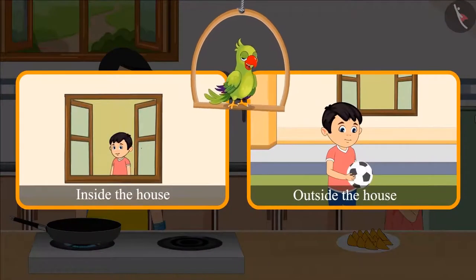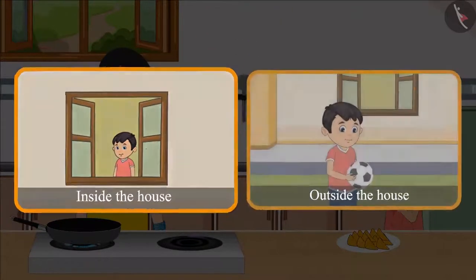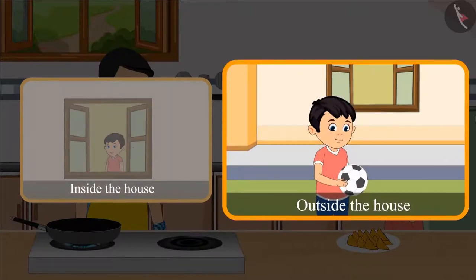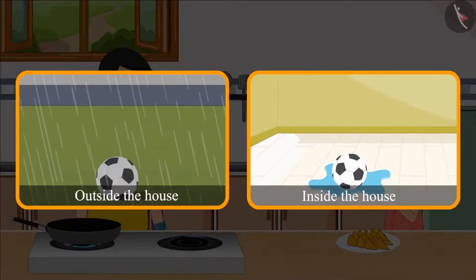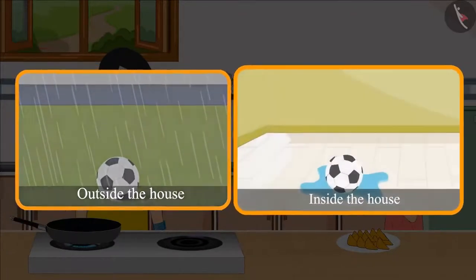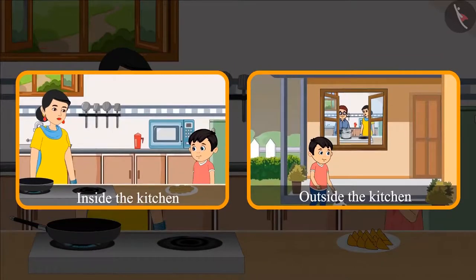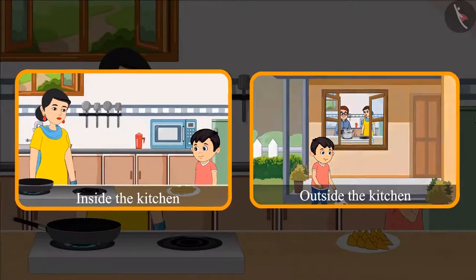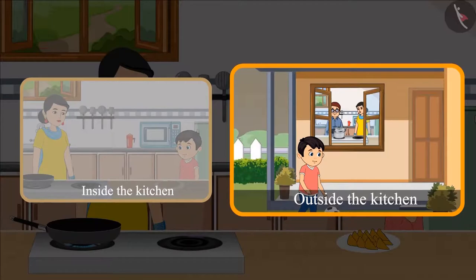Children, can you see whether Chotu is inside the house or outside the house? Yes, here Chotu is inside the house, and here he is outside the house. Here Chotu's ball is outside the house, and here it is inside the house. Now let's see where Chotu is — Chotu is inside the kitchen, and here he is outside the kitchen.